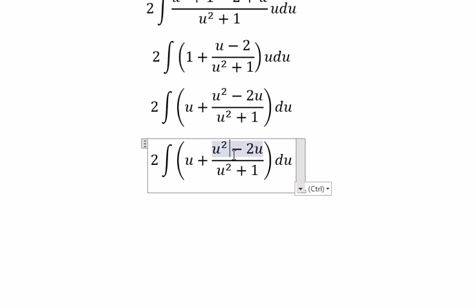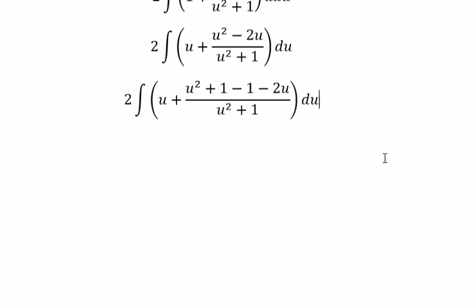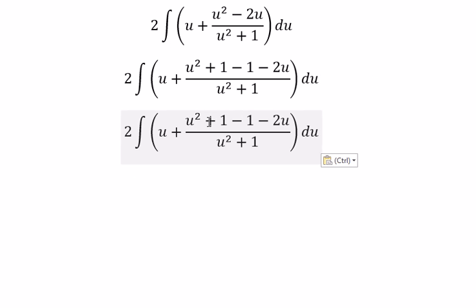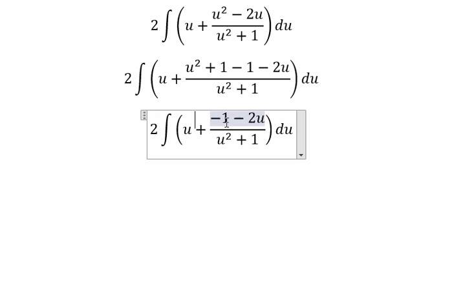Next we add number 1. This means we need to minus number 1. So u squared plus 1 divided by u squared plus 1, you will get about number 1.